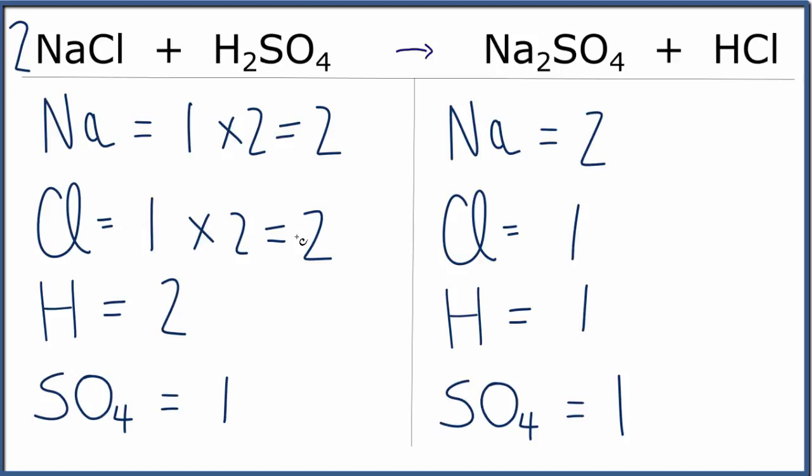Let's fix the chlorines. We have 2 here and 1 on the product side. If we put a coefficient of 2, we now have 1 times the 2 for our chlorine, and that'll solve the chlorines.